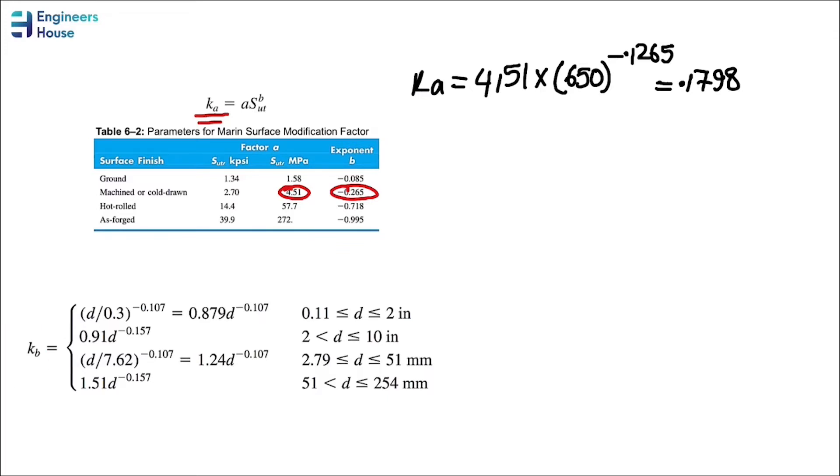Now we have the value of Ka, but what about Kb? This is as easy as Ka, because we have the diameter of our shaft. The diameter is 32 millimeters. Now that we have the diameter, we can use one of these equations. 32 is in this range, so we have to use this equation. Kb will be equal to... Remember that the value you put here is in millimeters. We have Ka and Kb now.